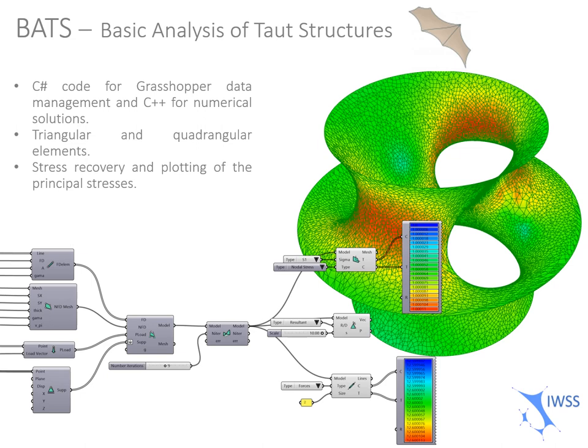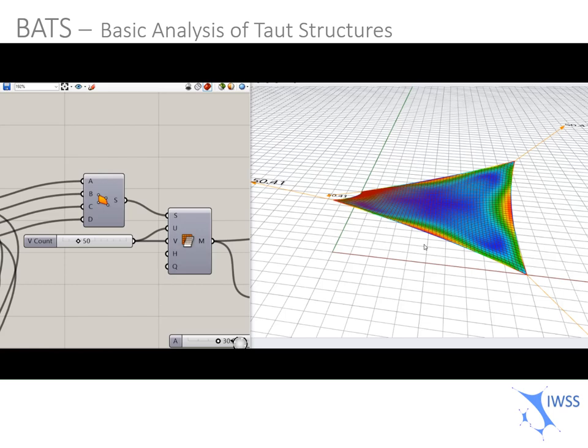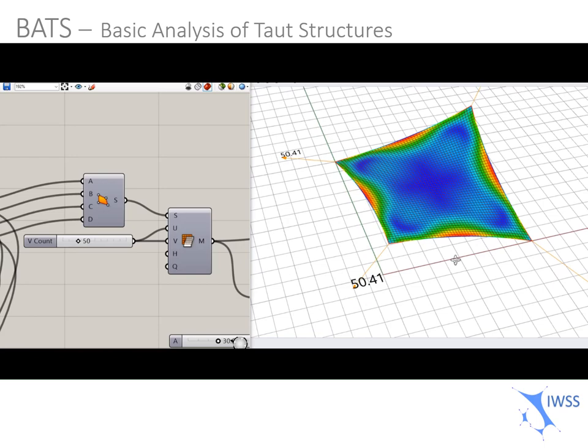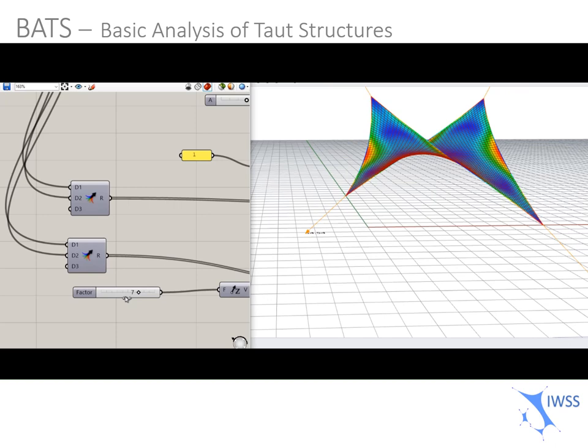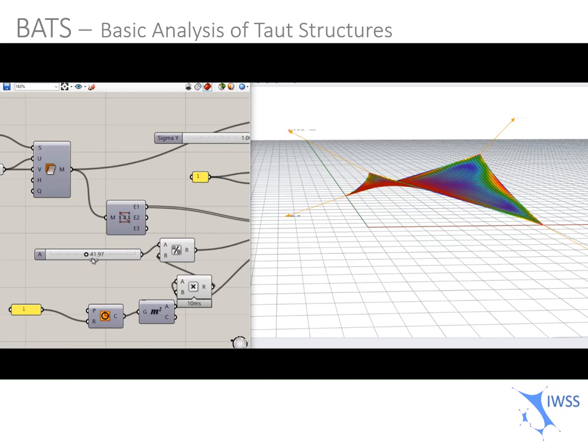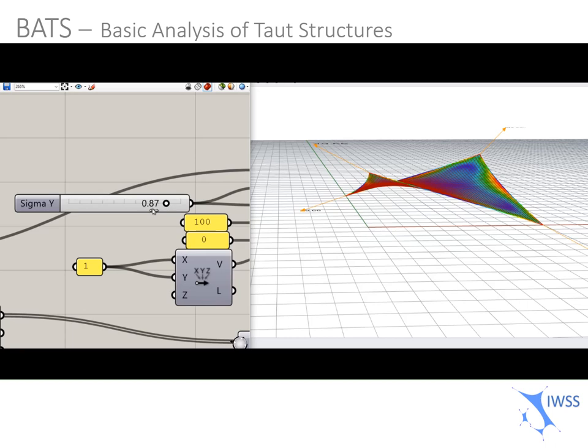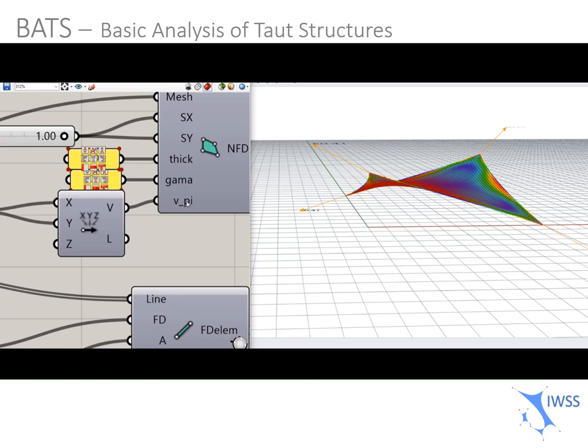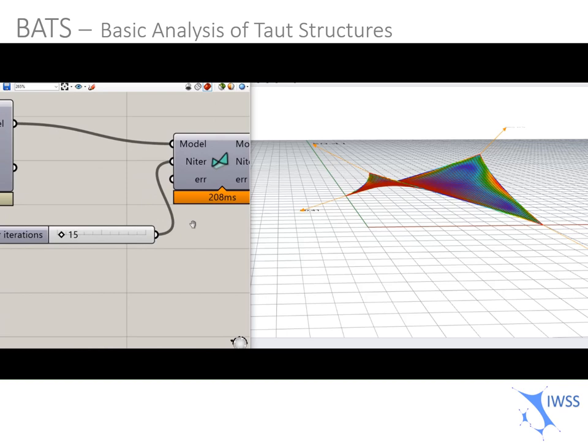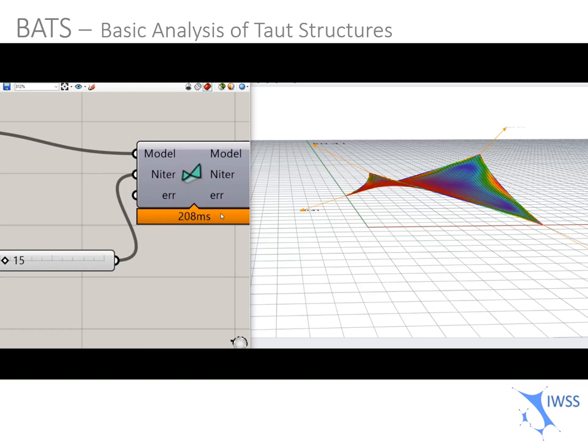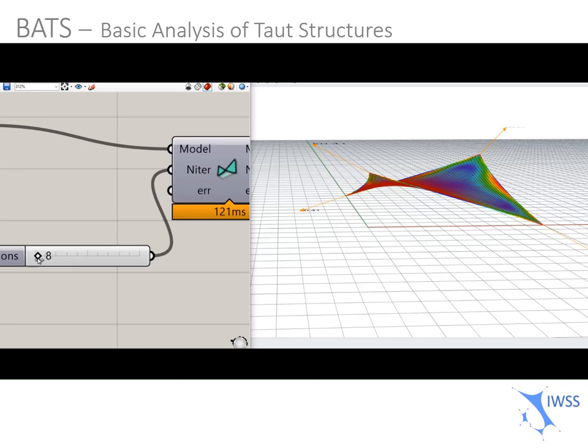So this is an example of the software. We have a 50x50 grid of quadrangular elements, and you can specify the height of the high point, the force density of the border cables, the force density of the membrane elements, the initial stresses that we are imposing. We can define the director plane for orthotropic stresses. We will assign this to a model, then you can have the solutions. In this case, we have 15 iterations in only 200 milliseconds.